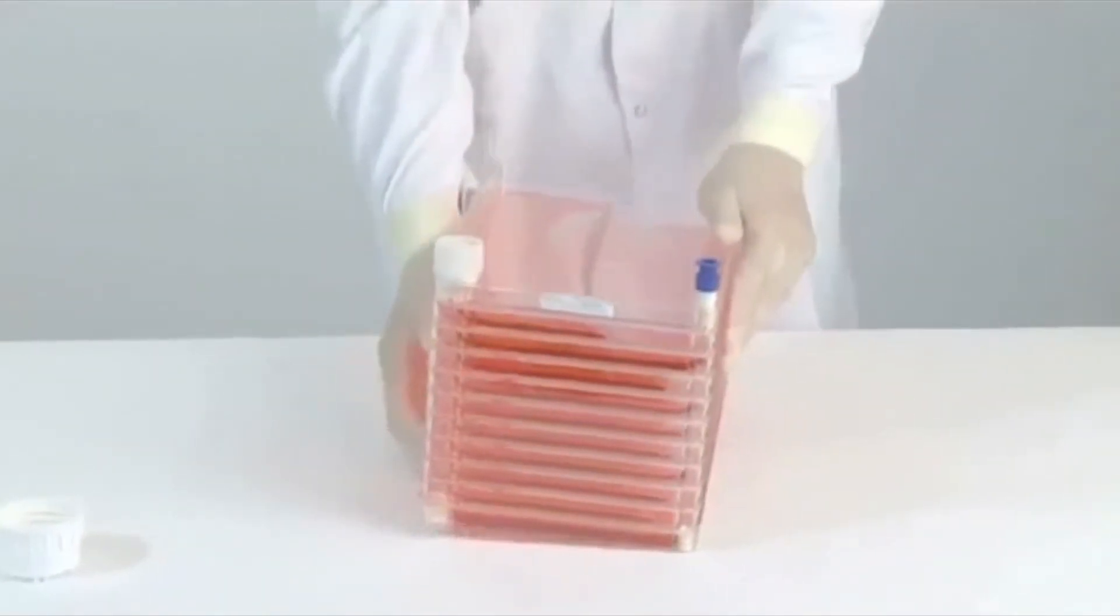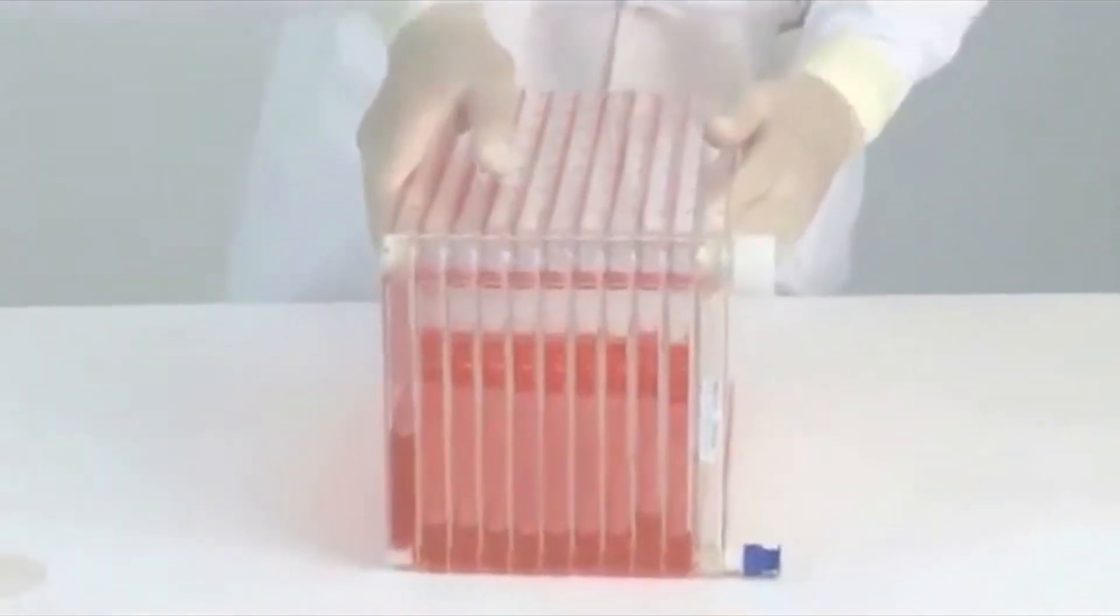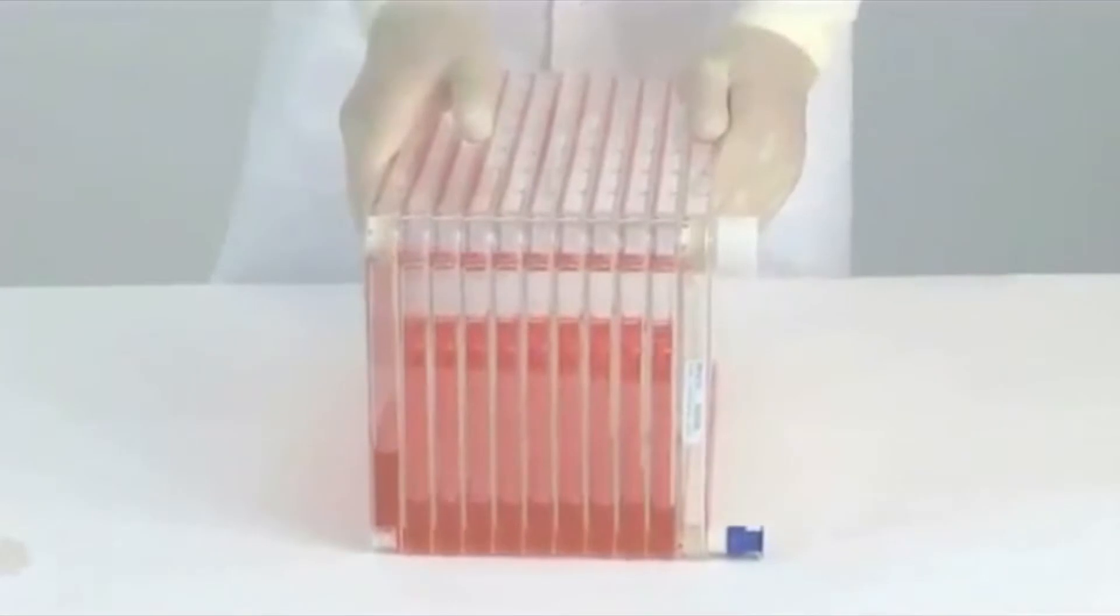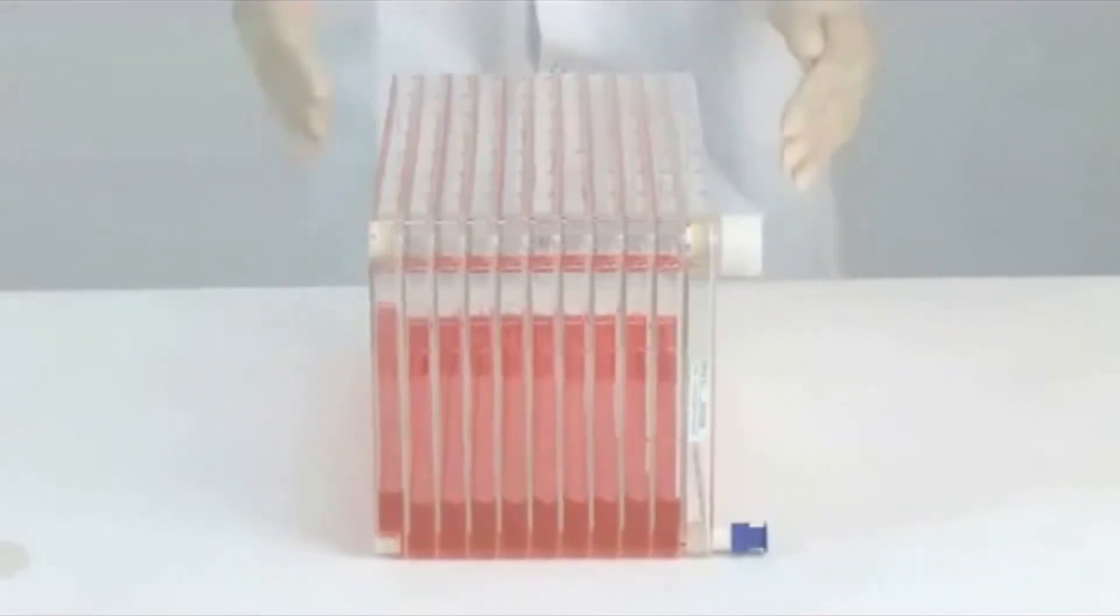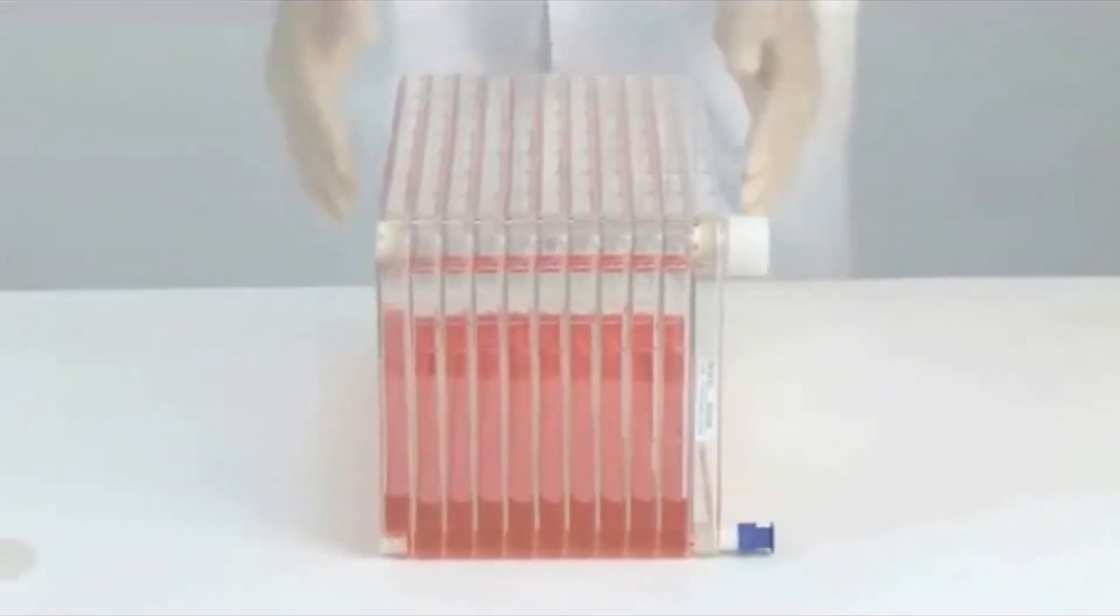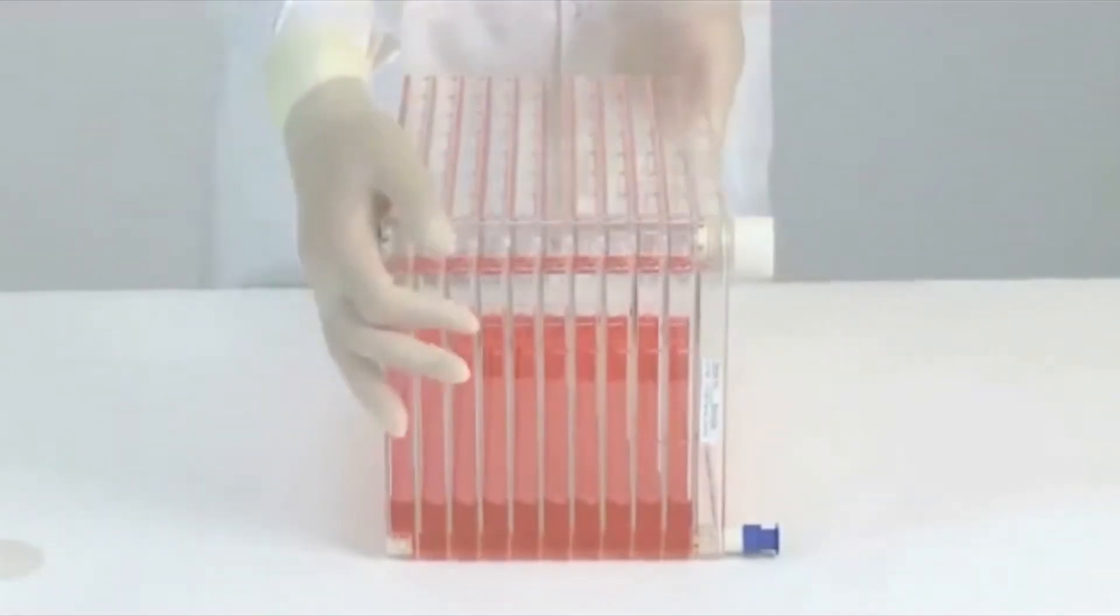Individually wrapped replacement closures are available from your NUNC distributor. To equilibrate the media level in all chambers, place the cell factory system on the long side with the small port. The white vent closure port should be at the top. This orientation is important as it will prevent the vent filter from getting wet.